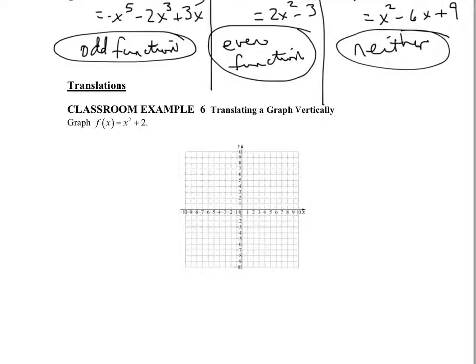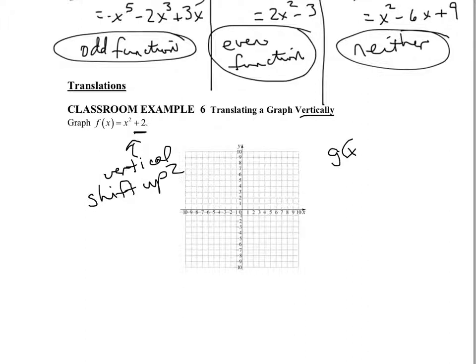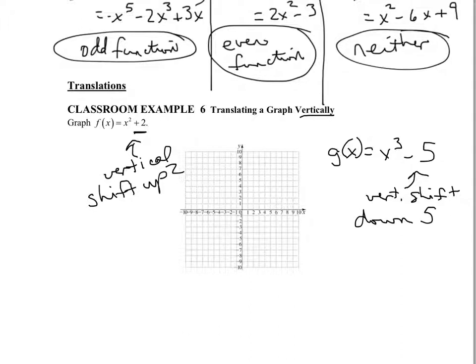One more type of transformation is translations — when we move something right, left, up, or down. When we have a vertical translation, it shows up at the very end of the function. If I see plus a number at the end, that tells me it's moving up; minus a number at the end means moving down. For example, if the function has a plus 2 at the end, that tells me it's a vertical shift up 2. If it had minus 5 at the end, that would be a vertical shift down 5 units.